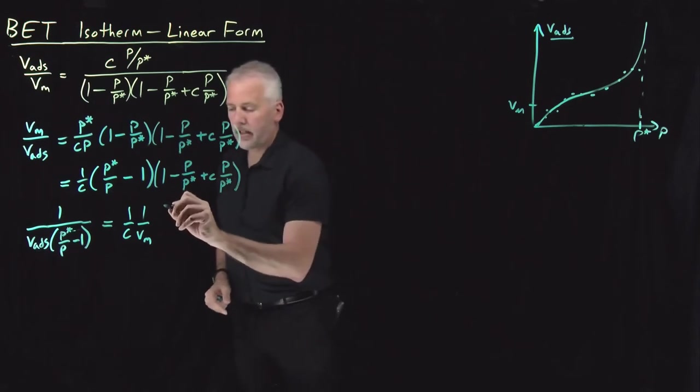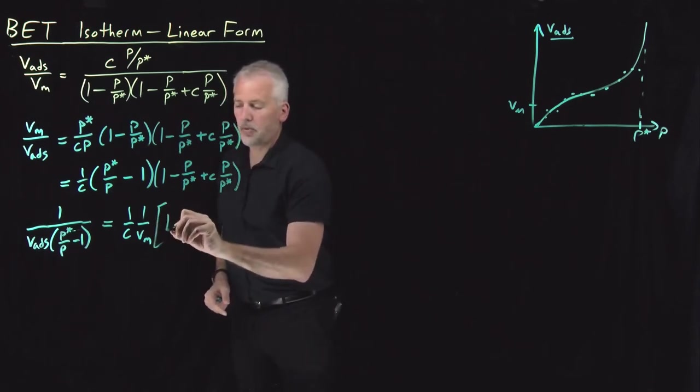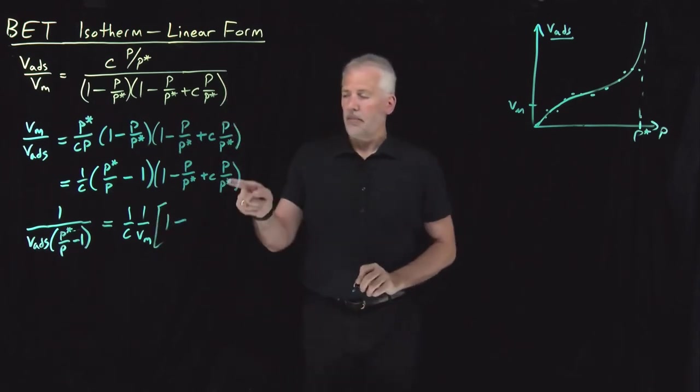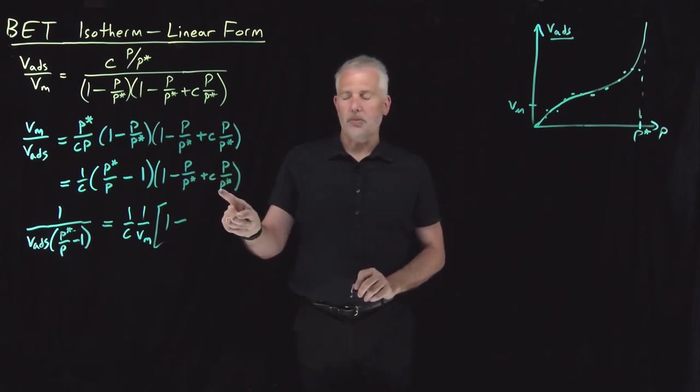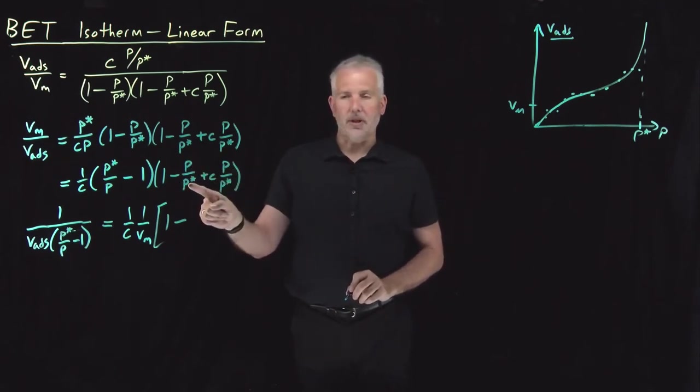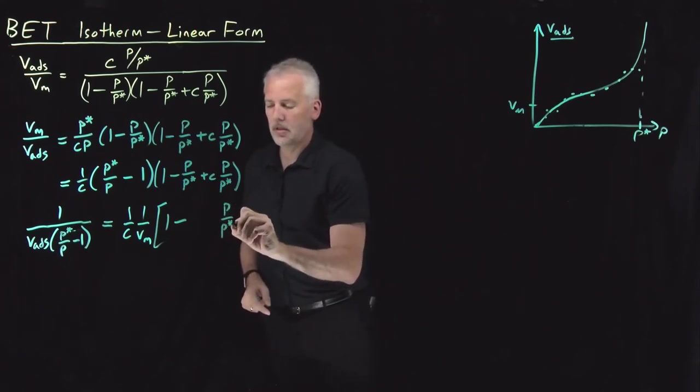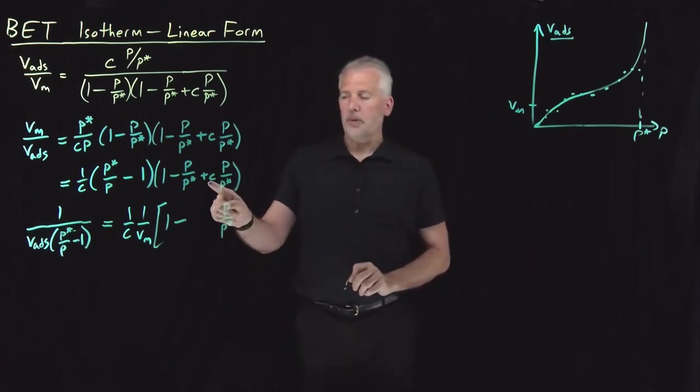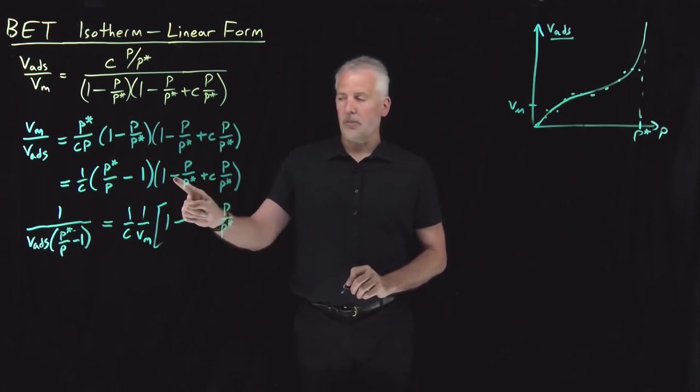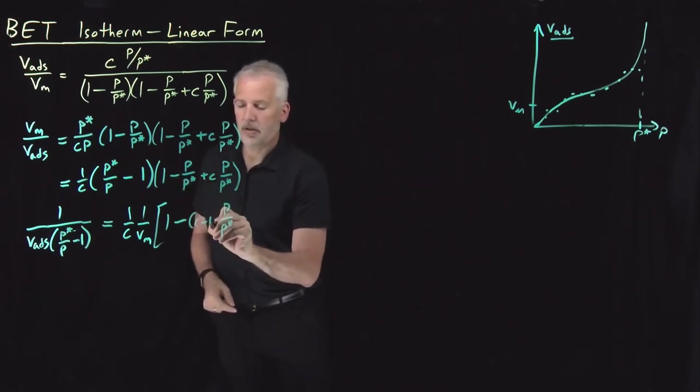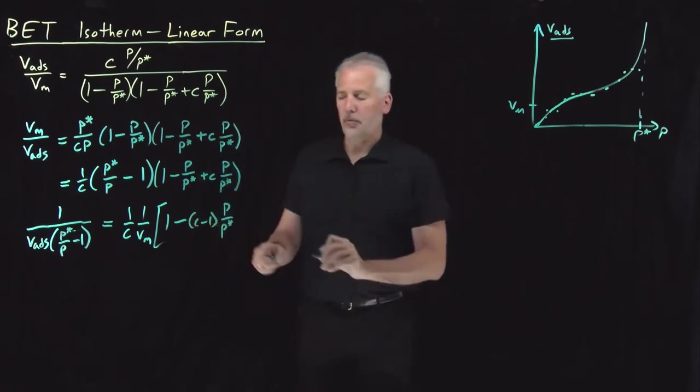And then the only term left on the right-hand side is this longer term in parentheses. When I rewrite that, I'm going to write that as 1 minus both these, the second and third pieces of that term in parentheses both involve a P over P star. So I'm going to collect those terms. P over P star is multiplying C, and it's also multiplying a negative 1. So I'll combine those together and call it C minus 1 times P over P star.